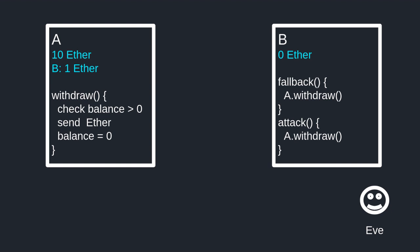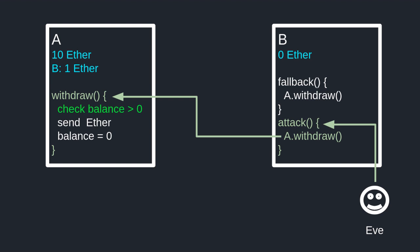The way re-entrancy works is like this. First, Eve calls the attack function, which calls the withdrawal function inside contract A. Inside contract A, since contract B is the caller, it checks that the balance of contract B is greater than zero — and it is, since contract B has one ether. So it sends that one ether back to contract B, and when it does, inside contract B it triggers the fallback function. So now contract B has one ether and contract A has nine ether.